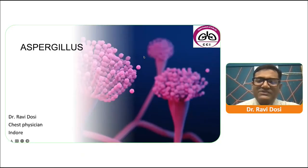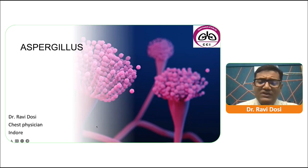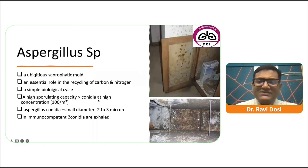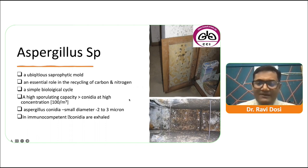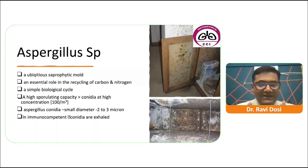Aspergillus is a mold seen everywhere, affecting practically every living being on this planet. Aspergillus species can be found in the nooks and corners of our homes to our air conditioners. It is a ubiquitous saprophytic mold with an essential role in the recycling of carbon and nitrogen in our atmosphere.